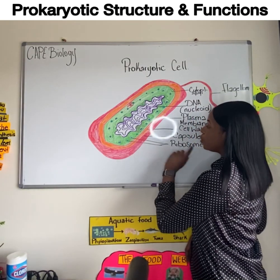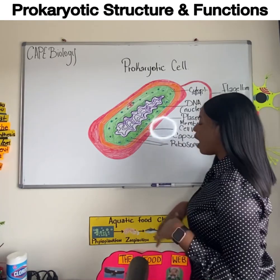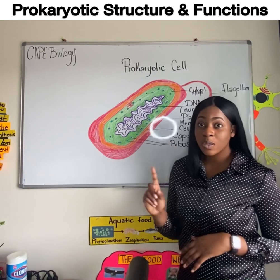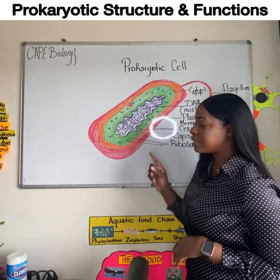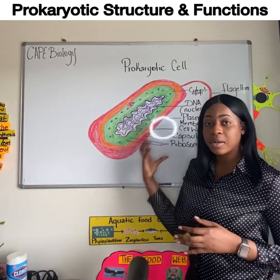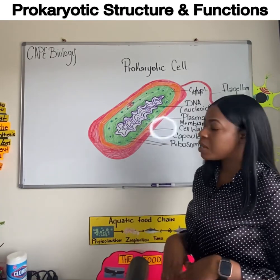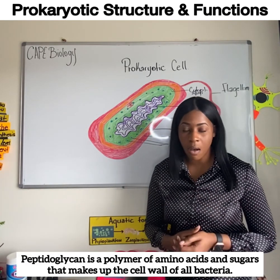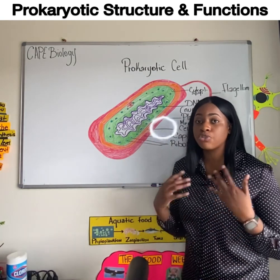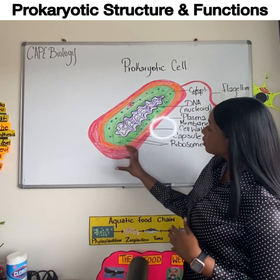Immediately inside the capsule, we have the cell wall. We saw in the eukaryotic video that plant cells also have a cell wall. However, the cell wall in prokaryotic cells is not made up of cellulose, but is made up of proteins called peptidoglycans. As in plant cells, it provides structural support to the prokaryotic cells.